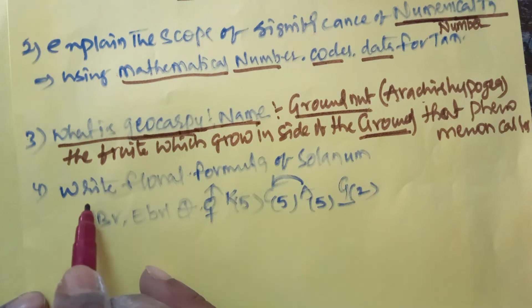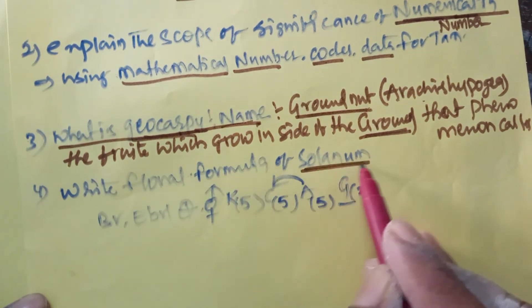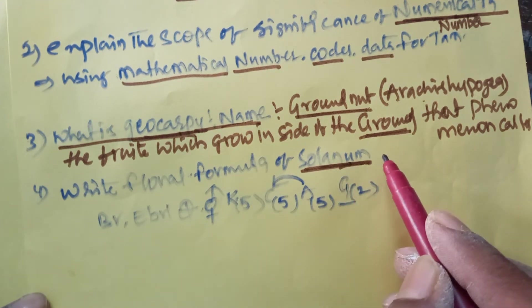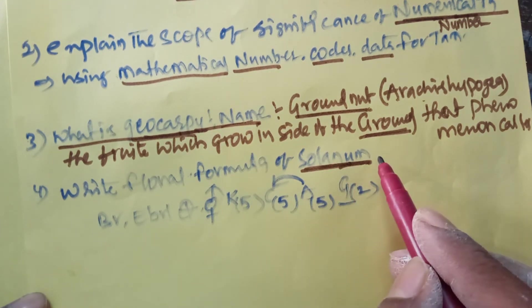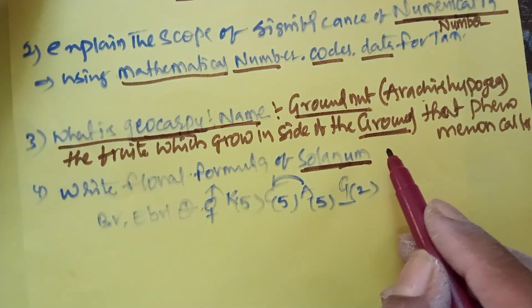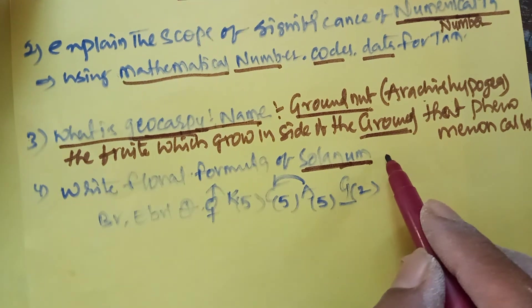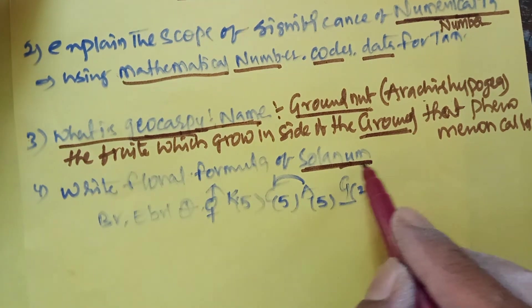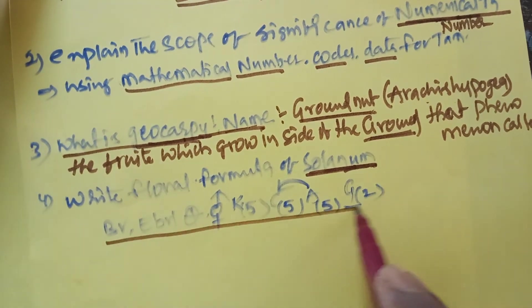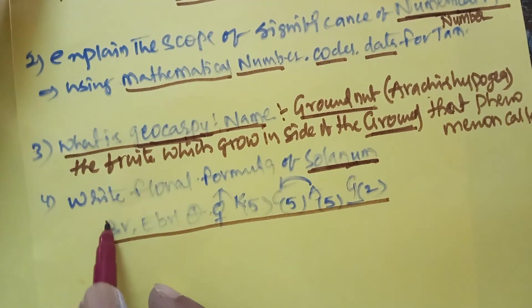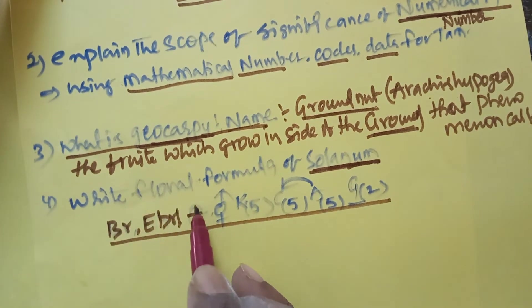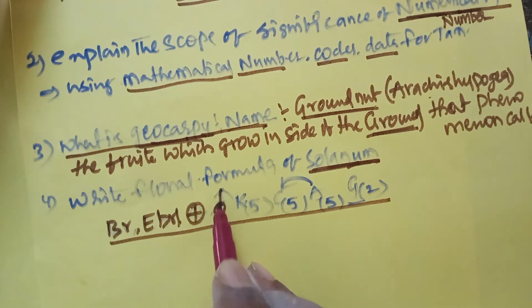Now come to the floral formula of Solanaceae family. The best examples of Solanaceae family are chili, potato, Datura, etc. The floral formula of Solanaceae family is: bracteate, ebracteolate, actinomorphic, bisexual.